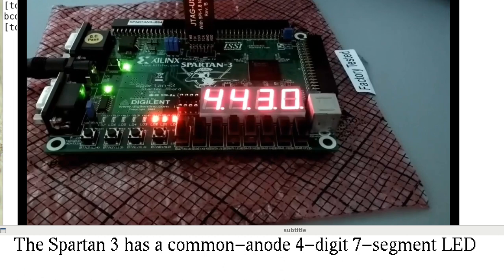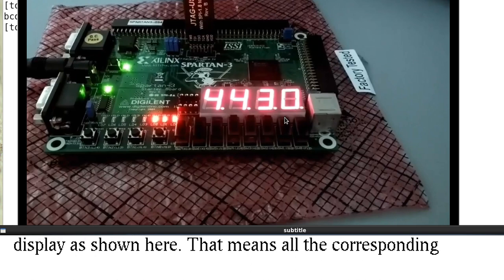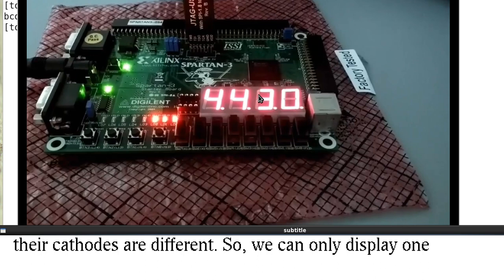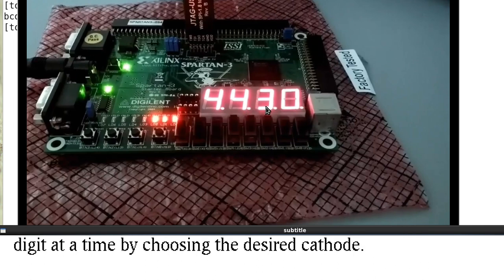The Spartan 3 has a common anode four digit seven segment LED display as shown here. That means all the corresponding segments of the four digits are connected together, but the cathodes are different, so we can display only one digit at a time by choosing the desired anode.